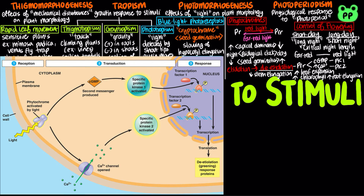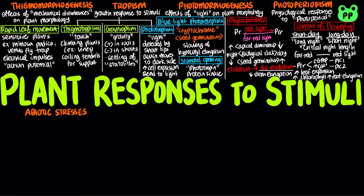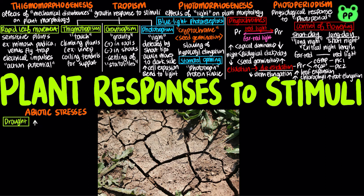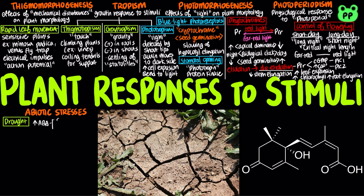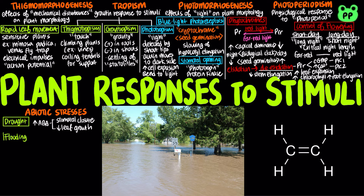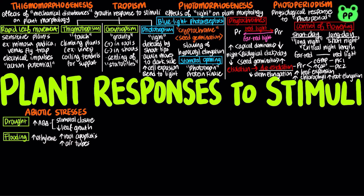Both protein kinases activate specific transcription factors that encode proteins for the deetiolation response. Plants also respond to various environmental stresses, including both abiotic and biotic stresses. During droughts, plants increase production of abscisic acid, leading to the closure of stomata to prevent severe water loss. Abscisic acid also slows leaf growth, reducing the exposed surface area. During flooding, the production of ethylene increases, leading to the apoptosis of many root cortex cells, creating air tubes that help plants survive oxygen deprivation. Plants respond to salt stress by producing solutes tolerated at high concentrations, which keeps the water potential of cells more negative than that of soil solution, so that plant cells can remain turgid.